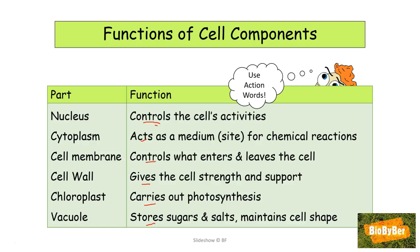Let's look at each part. The function of the nucleus is to control the cell's activities — it acts like the brain of the cell. The cytoplasm acts as the medium or site for chemical reactions. The cell membrane controls what enters and leaves the cell; it is semi-permeable and acts like a sieve, allowing small molecules in and out but not large ones. S for sieve, S for semi-permeable.